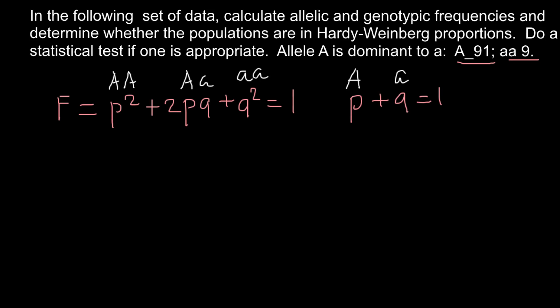So how are we going to solve this problem? We have two phenotypes here. These two genotypes — homozygous dominant and heterozygous — make one phenotype because this is simple Mendelian genetics; heterozygous looks the same as homozygous dominant. Homozygous recessive looks different, and we know that we have nine of those genotypes. We can put that number here — nine. And we have 91 of the dominant phenotype. As you see, nine stands for the homozygous recessive genotype.